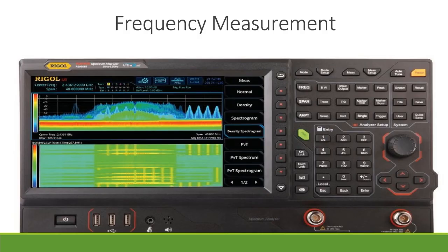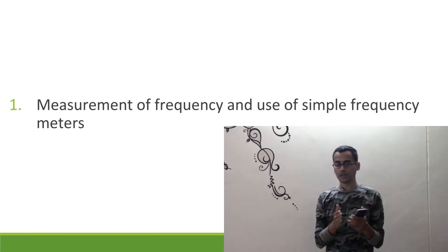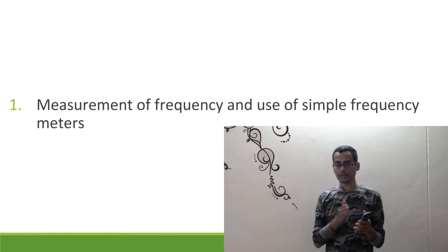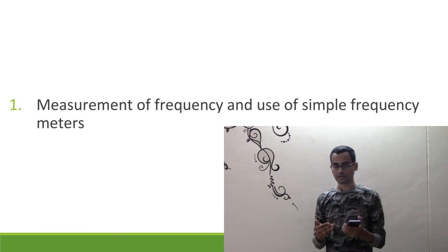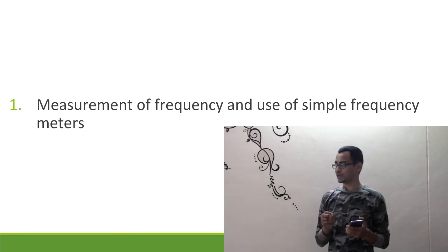The final topic is frequency measurement. Whenever you are operating or building your own receiver, you need to understand the basic concepts of frequency measurement, because the government licenses you to use a specific part of the spectrum. You need to understand what spectrum is and how to measure the frequency at which you're transmitting. If you don't do that properly, there's a high chance you might interfere with other services operating at frequencies you're not licensed for, which is an offense. So paying attention to this topic is also very important.